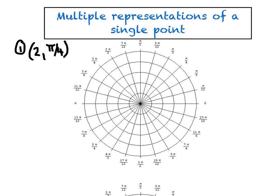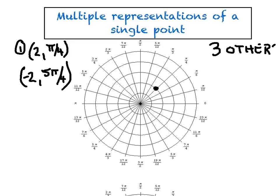Multiple representations of a single point is a profound moment in your polar career — feeling comfortable not only plotting a point but naming three other ordered pairs representing the same point. Let's plot 2, π/4: walk 2 units right, rotate π/4, landing right there. Now I want three other ordered pairs for that same exact point. The first: rotate to 5π/4 but with an r value of negative 2, giving us the ordered pair -2, 5π/4. Remember, r value comes first and theta comes second.